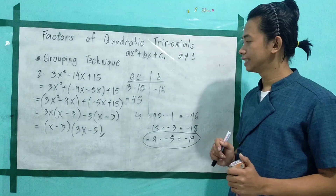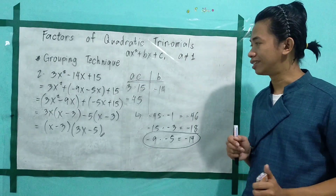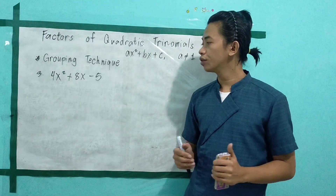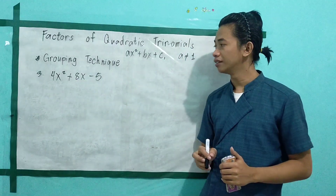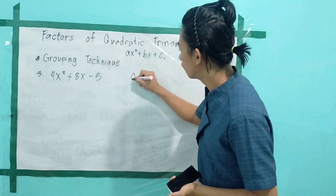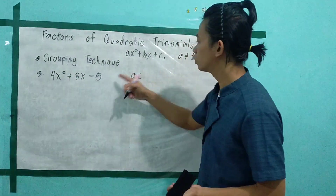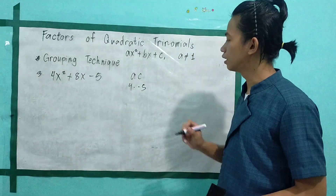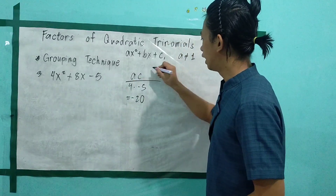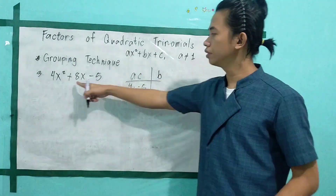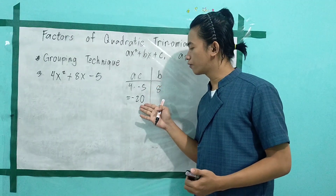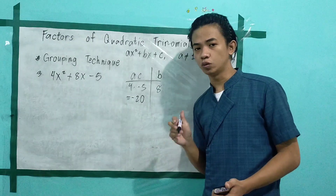Next, let's proceed to problem number 3. In problem number 3, we have 4x squared plus 8x minus 5. Take the numerical coefficient of a and multiply it by c: a times c equals 4 times negative 5, which is negative 20. And the numerical coefficient of b is positive 8.